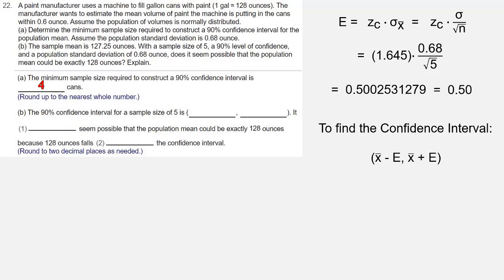The x bar value that we were given is 127.25. So it's 127.25 minus 0.5, 127.25 plus 0.5, which is 126.75 to 127.75. And that is your 90% confidence interval.